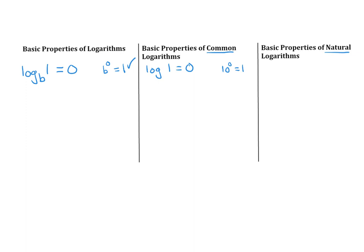Natural log means it has base E, so we write it as ln. ln of 1 also equals 0 because E to the power of 0 equals 1.